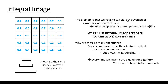The problem is that we have to calculate the average of a given region several times. Calculating the average has a running time complexity of O(n²), which is a quadratic running time algorithm. We can use the integral image approach to achieve O(1), so constant running time complexity.